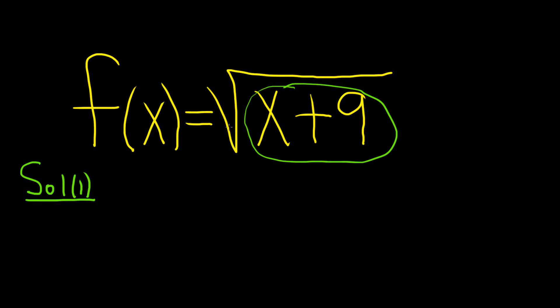whenever you have a square root function and you're looking for the domain, is to take the entire thing in the square root and set it greater than or equal to 0 every time. So just take this whole thing and set it greater than or equal to 0.